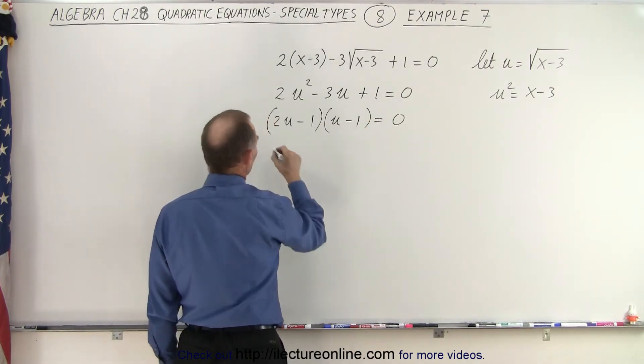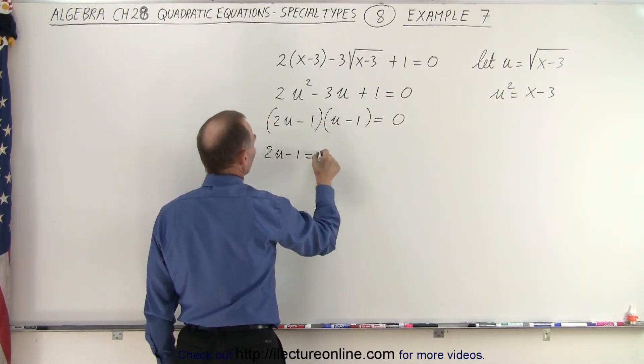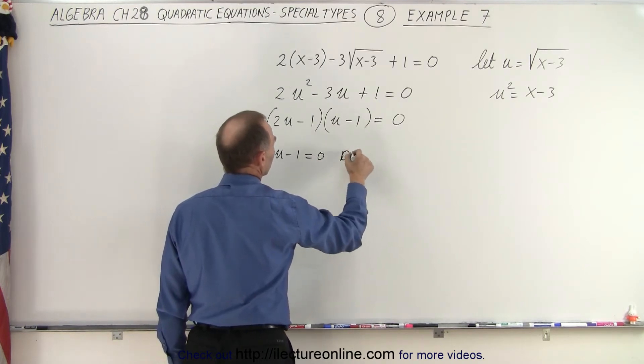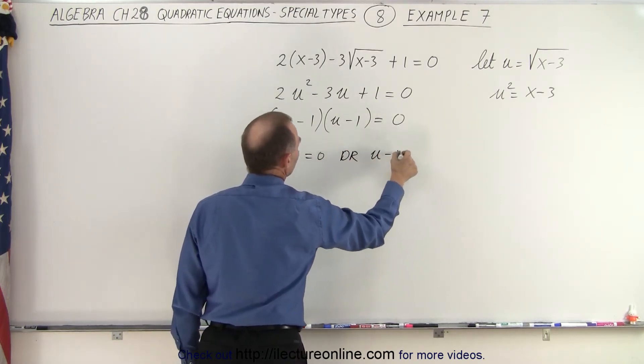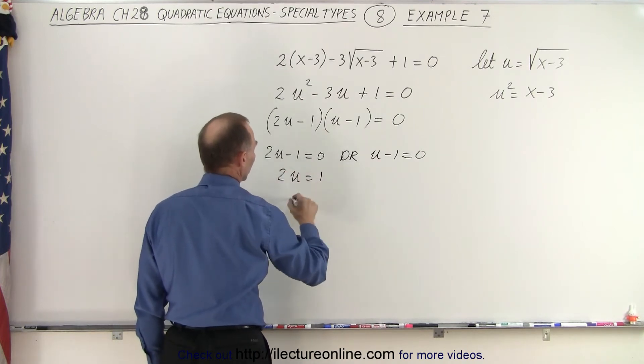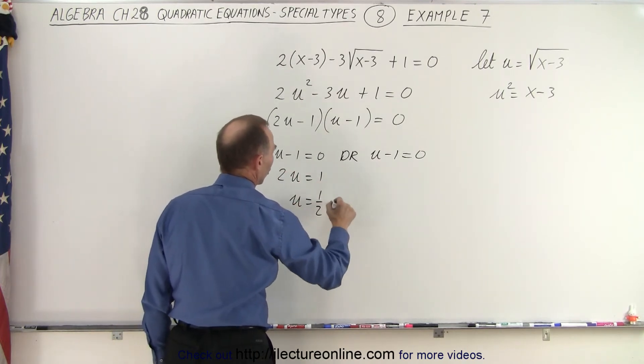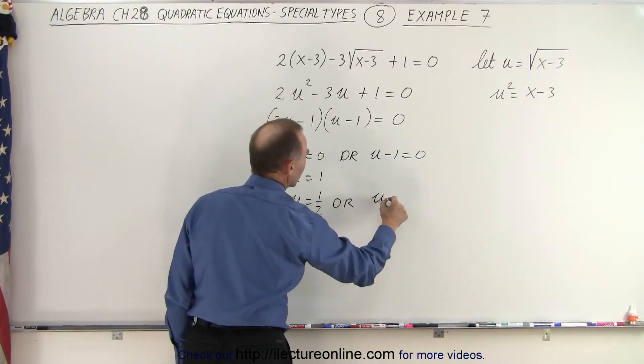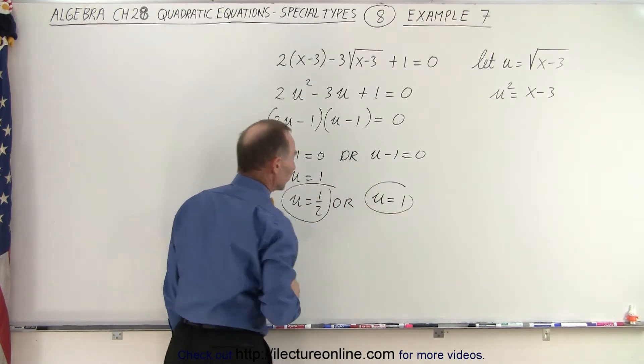Now I can see that 2u minus 1 equals 0, or u minus 1 equals 0. In this case, we get 2u equals 1, or u equals 1-half, or we get u equals 1. And so those are the two solutions for u.